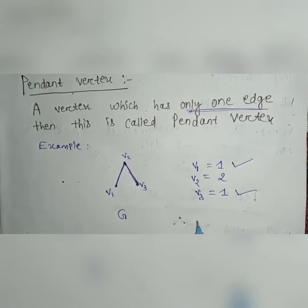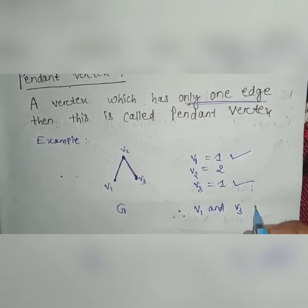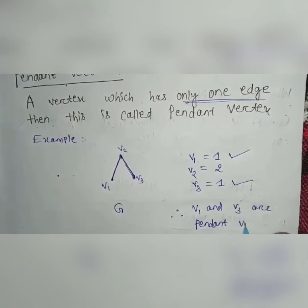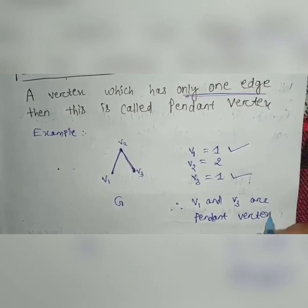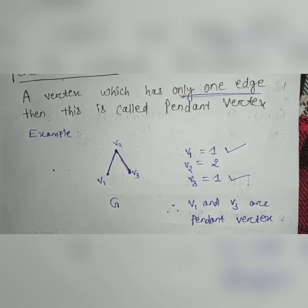So here in this graph V1 and V3 are Pendant Vertex. Because V2 has 2 vertices. Another one. Is that clear to you? Thank you.